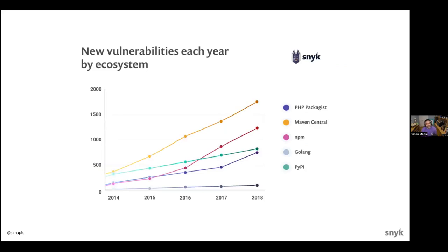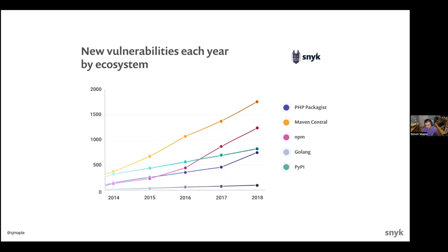When we think about not just the libraries being added into repositories but the baggage that comes with that — the number of vulnerabilities — we can see that known issues being added are growing year on year. This is the number of disclosures happening per year, a couple of years out of date here, but you can see the trend really increasing largely across all repositories.